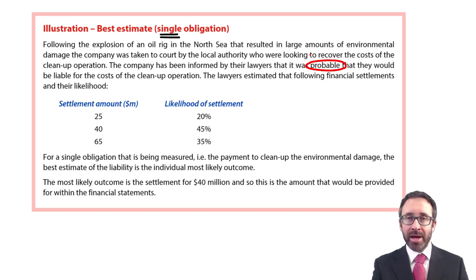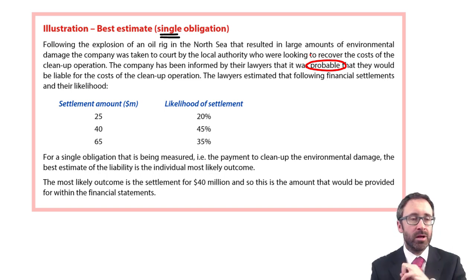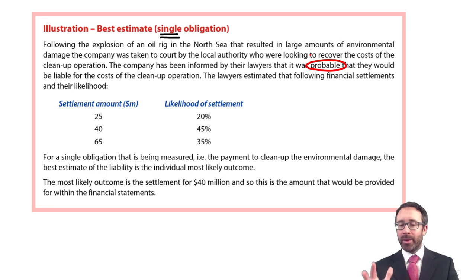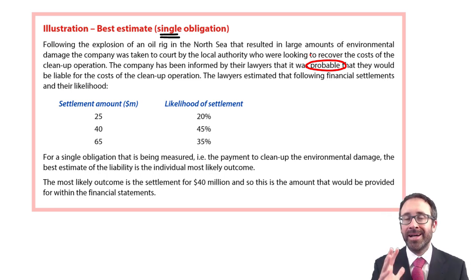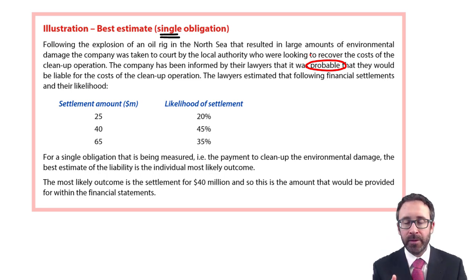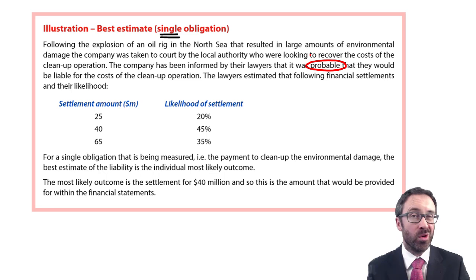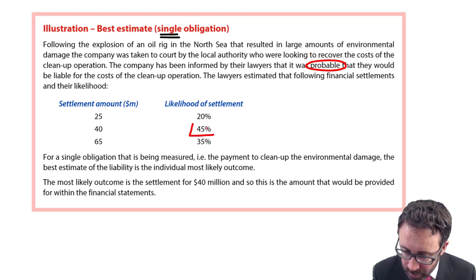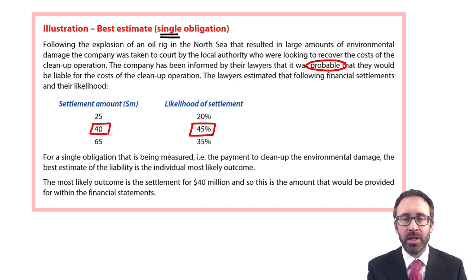The company has been informed by their lawyers that it is probable — greater than 50% chance — that they will be liable for the costs of the cleanup operation. We need to measure the provision at our best estimate. As a single obligation, we look at the most likely possible outcome. The most likely outcome shown here is a 45% chance of it being $40 million.